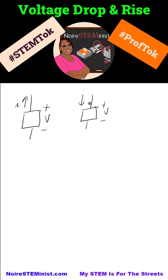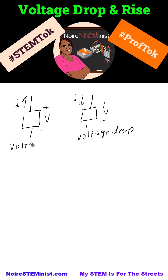When you have current going into the positive and out of the negative, we call that a voltage drop. When you have current going into the negative and out of the positive, we call that a voltage rise.